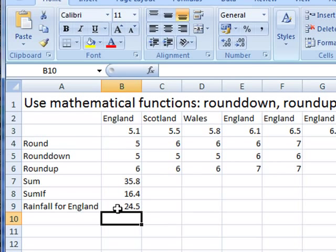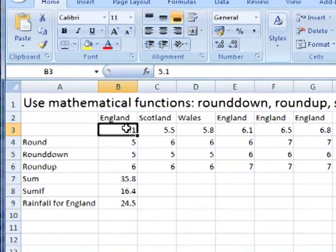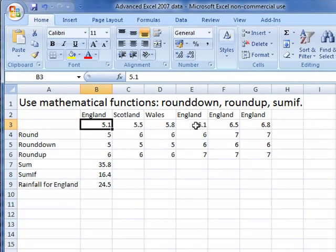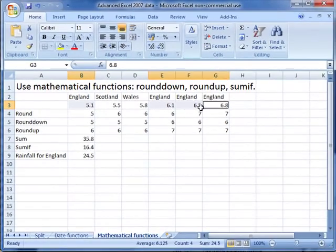24.5. Let's just check. That one's England. And hold down the control key. That one's England. That one's England. That one's England. So I've selected all four of those that are England. Look down here. Sum is 24.5.